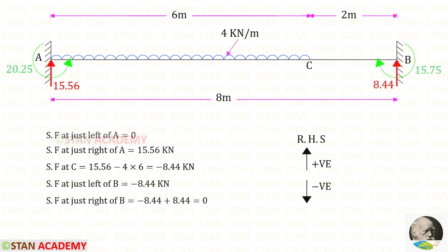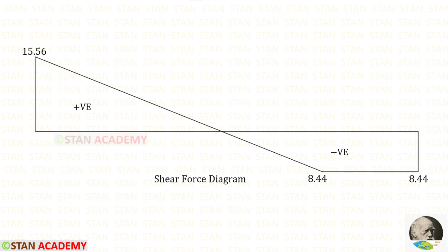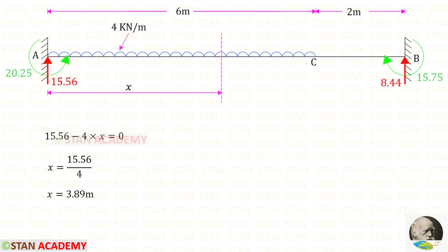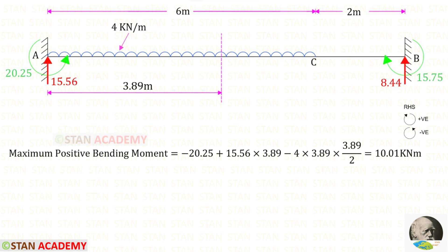Now let us find the shear force values starting from point A, using the right-hand side rule: upwards positive and downwards negative. Here you can see the shear force diagram. At a certain point the shear force becomes 0, and at that point there will be maximum positive bending moment. I have made a section at a distance of x from point A, and since the shear force is 0 at this section, we can find x = 3.89 meters.